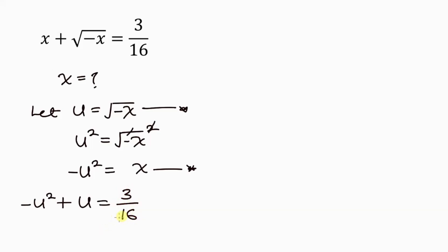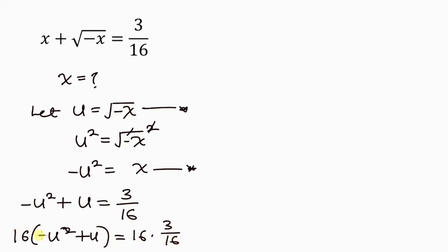Many of you don't like fractions, so we're going to eliminate the fraction by multiplying both sides by 16. Distributing 16 into the bracket: 16 times negative u squared is negative 16u squared, plus 16 times u is 16u. This equals 16 times 3 over 16 — the 16s cancel, leaving 3.